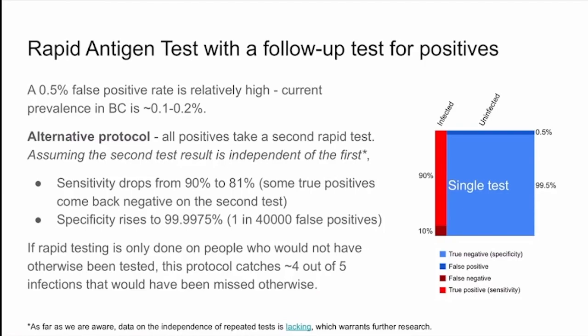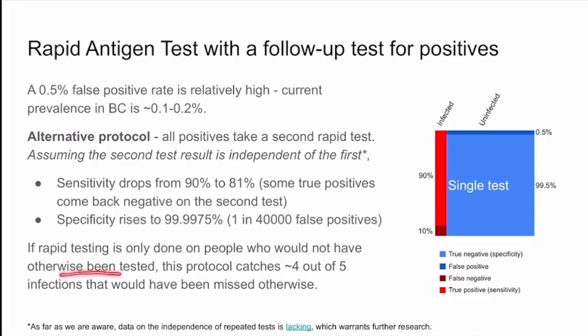As mentioned, if this rapid testing is only done on people who would not have been otherwise testing, this protocol, even at 81%, catches four out of five infections that would have been missed otherwise.